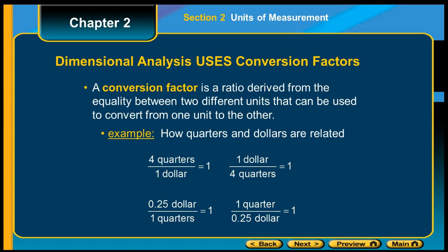Dimensional analysis uses those conversion factors. A conversion factor is a ratio derived from the equality between two different units that can be used to convert from one unit to the other. For instance, four quarters is one dollar and one dollar is four quarters. We know that that value is essentially the same. So if you're taking something divided by itself, that's one. So all of the conversion factors are equal to one.